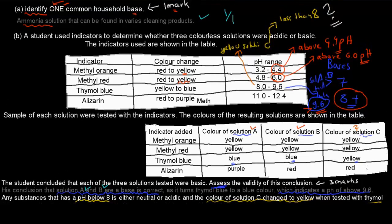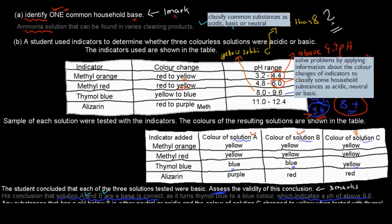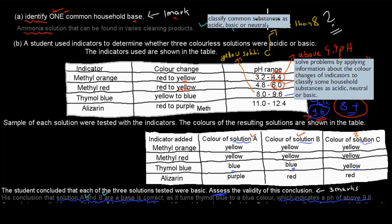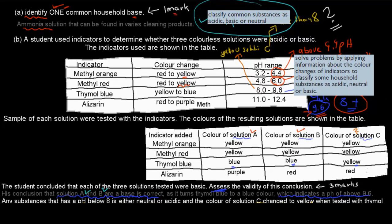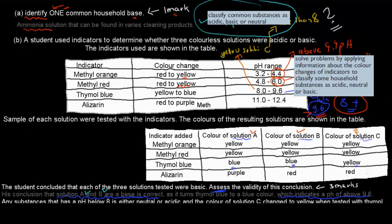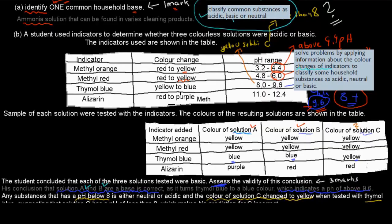These questions come from specific curriculum dot points. The first is: classify common substances as acidic, basic, or neutral — that's where the household base question comes from. The second is: solve problems by applying information about the color changes of indicators to classify substances as acidic, neutral, or basic — that's the indicator analysis question. Hopefully that was useful.